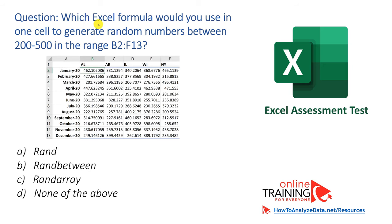Let's look at the question: which Excel formula would you use in one cell to generate random numbers between 200 and 500 in the range B2 to F13? It shows sample random values with decimal points populating that range. There are four choices: RAND, RANDBETWEEN, RANDARRAY — all three are valid Excel functions — and choice D, none of the above. So how would you answer?